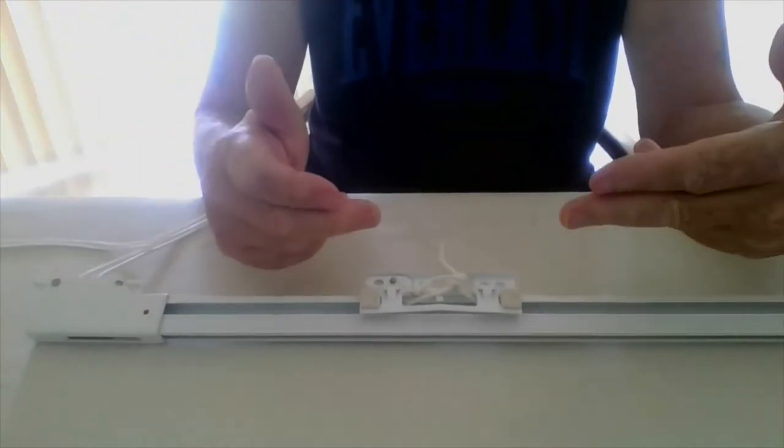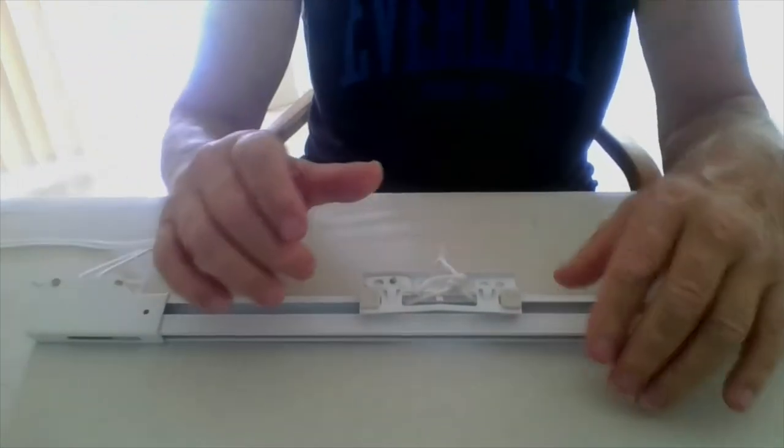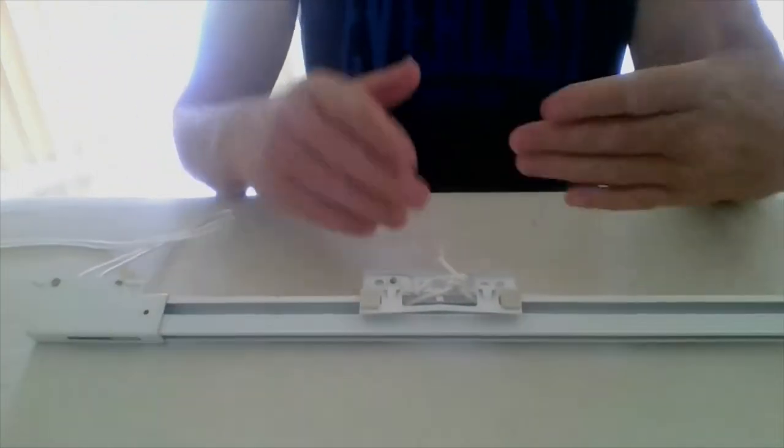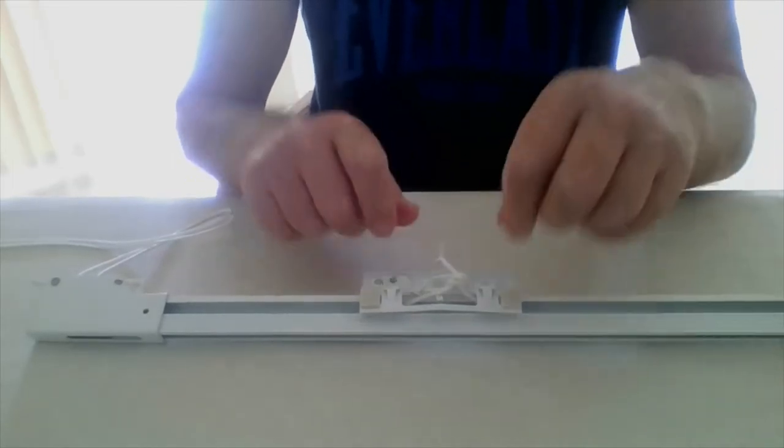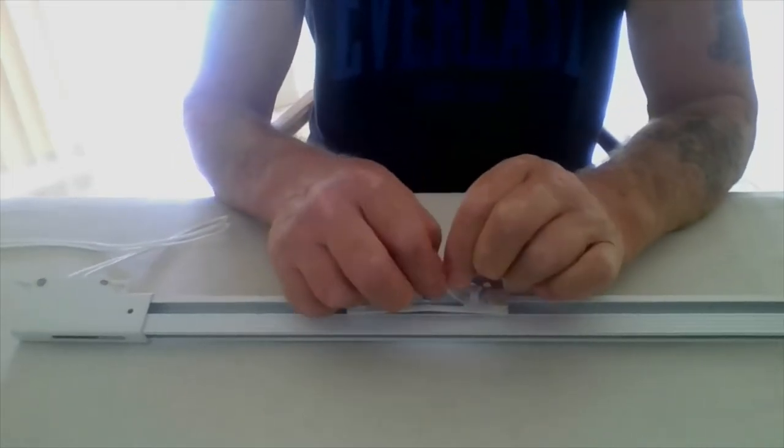The second problem is that the curtains, because you've expanded the track to the size you want, the curtains are probably not going to close in the centre. So we're only going to deal with the shortening of the cords with this one.